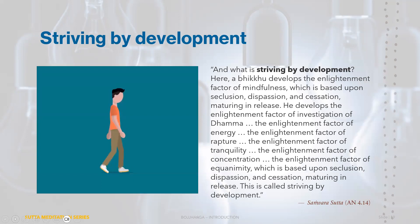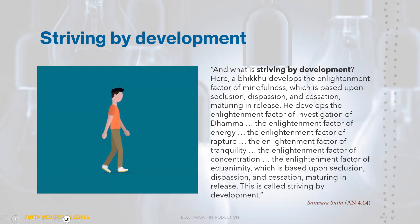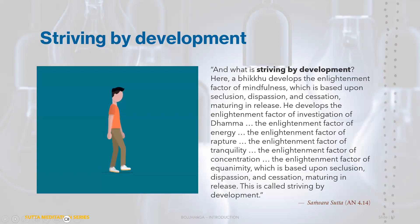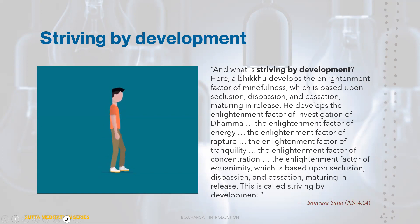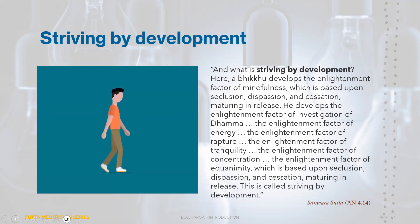The phrase that goes with each of the enlightenment factors is quite important: 'based upon seclusion, dispassion, and cessation, maturing and release.' The Buddha uses this same phrase throughout many Suttas in the Bojhangasangyutta numerous times. We'll delve into the meaning behind this and what it alludes to in future sessions.